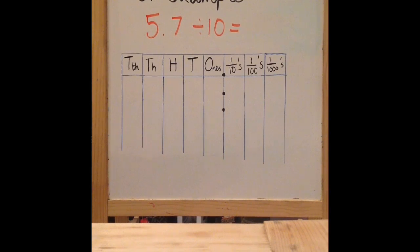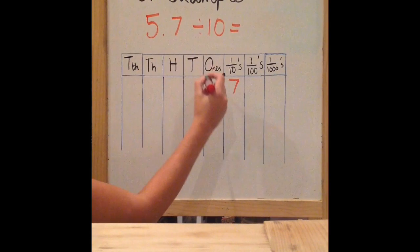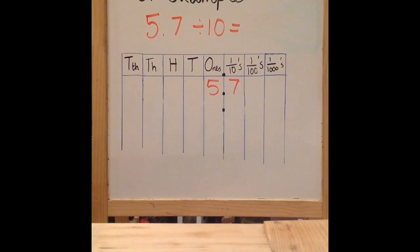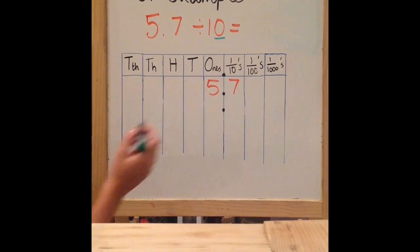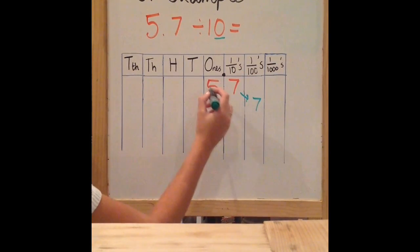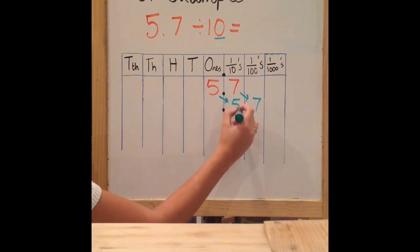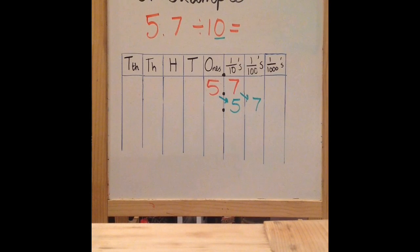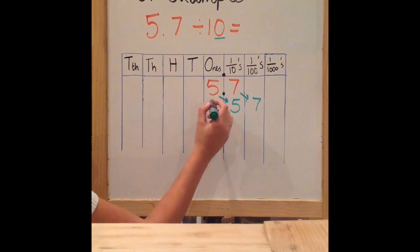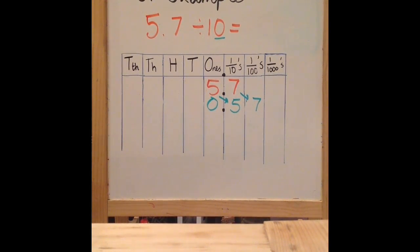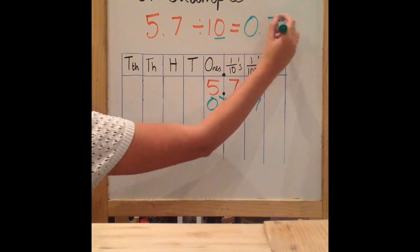When faced with decimals, the process is exactly the same. Here we have 5.7 divided by 10. Once again, put the numbers in the correct place value columns: 7 in the tenths column and 5 in the ones column. Because I'm dividing, my number is getting smaller, so I am moving my digits to the right. 10 has one zero, so I must move my digits one place to the right. My 7 moves from the tenths column into the hundredths column, and my 5 moves from the ones column into the tenths column. I must put a zero as my placeholder, so my answer to 5.7 divided by 10 is 0.57.